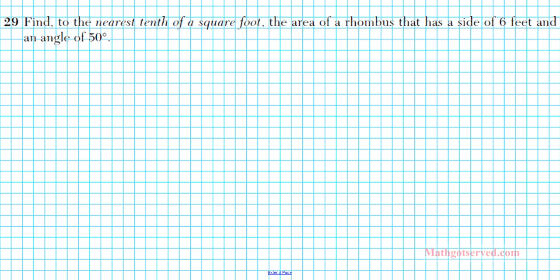Let's take a look at problem 29. It says, find to the nearest tenth of a square foot the area of a rhombus that has a side of 6 feet and an angle of 50 degrees. In order to answer this question, it's very good to draw and give ourselves a visual, draw the shape under consideration.